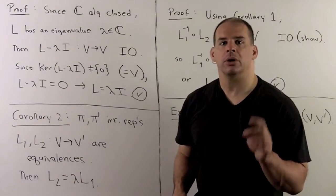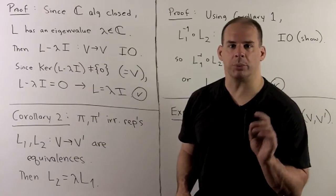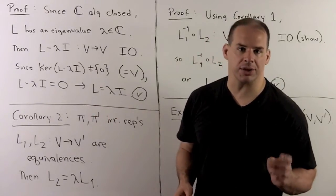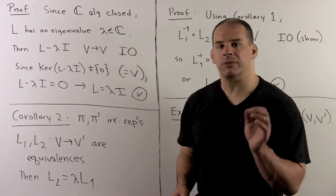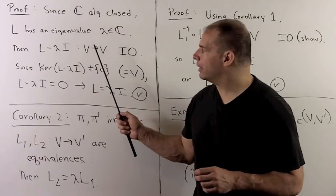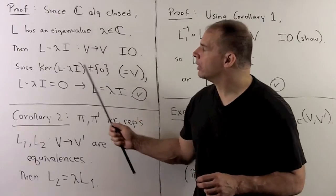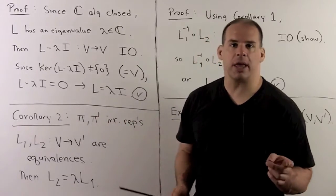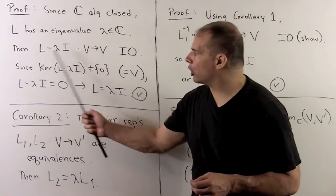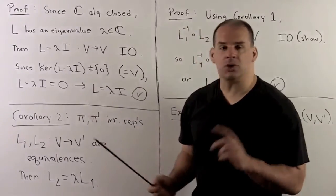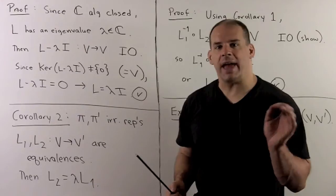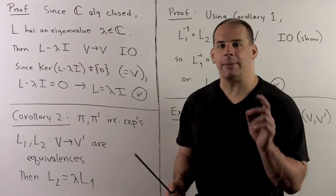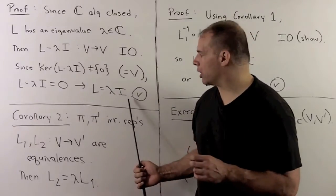For the proof, we note that the complex numbers are algebraically closed, so L has at least one eigenvalue in the complex numbers. We form L minus lambda I from V into V. It's straightforward to show this is an intertwining operator. By Schur's Lemma, the kernel is non-zero, so it must be all of V, and L minus lambda I is precisely zero. That means L equals a multiple of the identity, and that's our result.